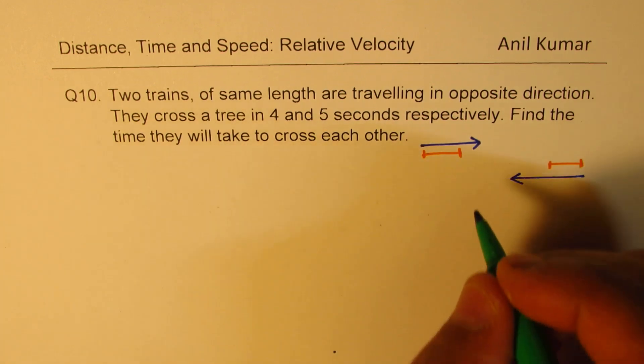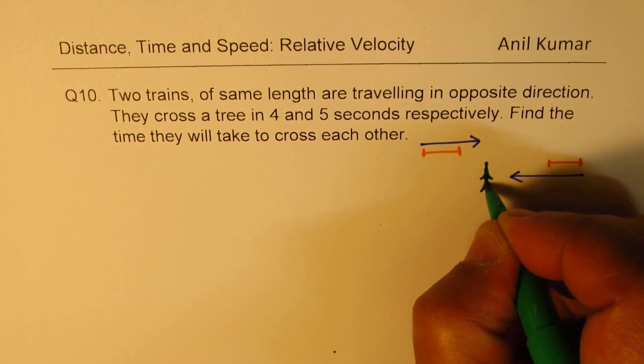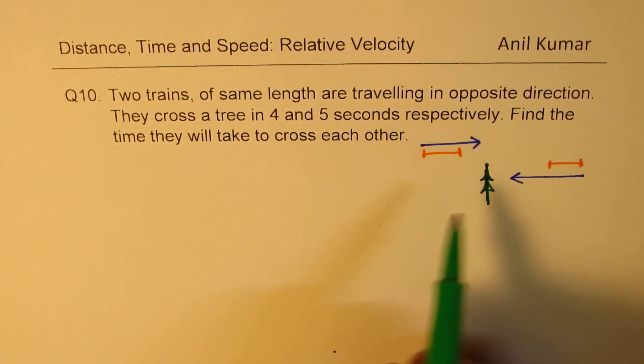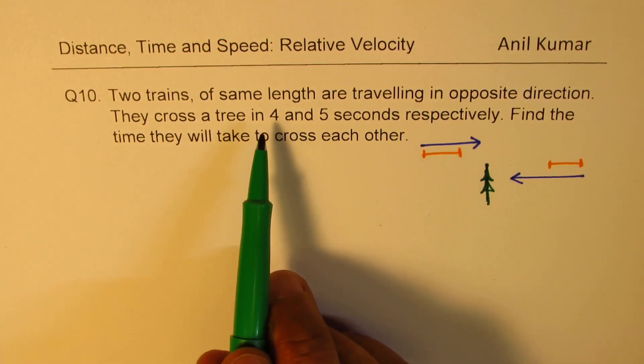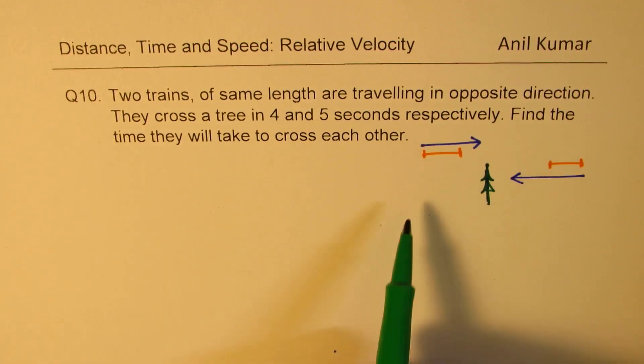And let us say there is some tree here. So there is some tree here, and they cross this tree. One of the trains take 4 seconds to cross it, the other one takes 5 seconds.